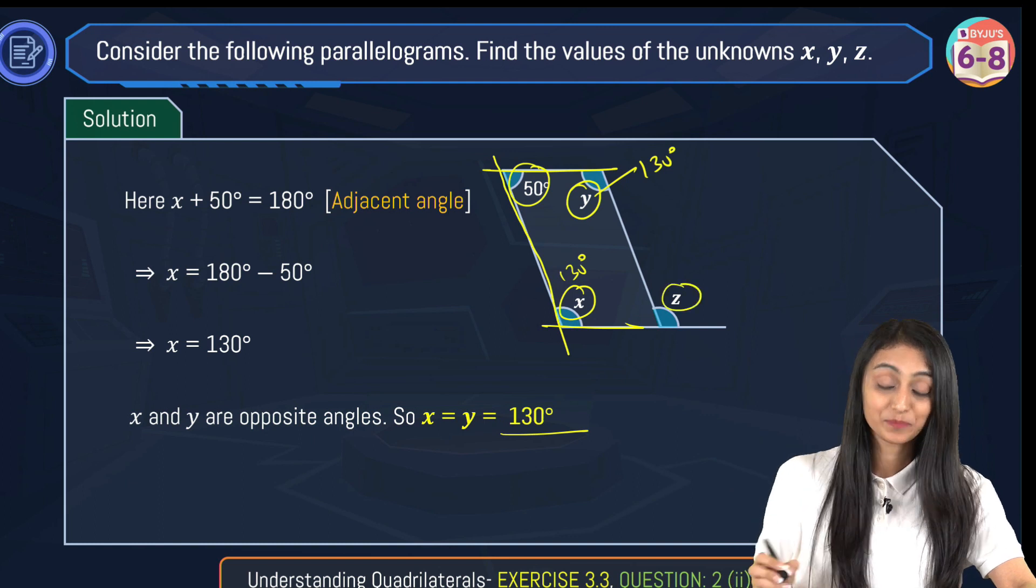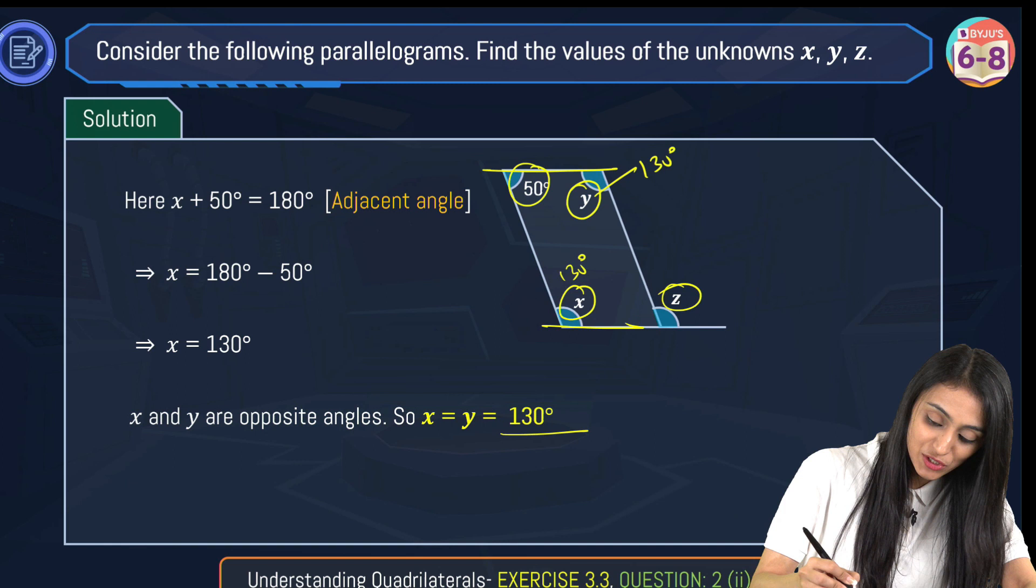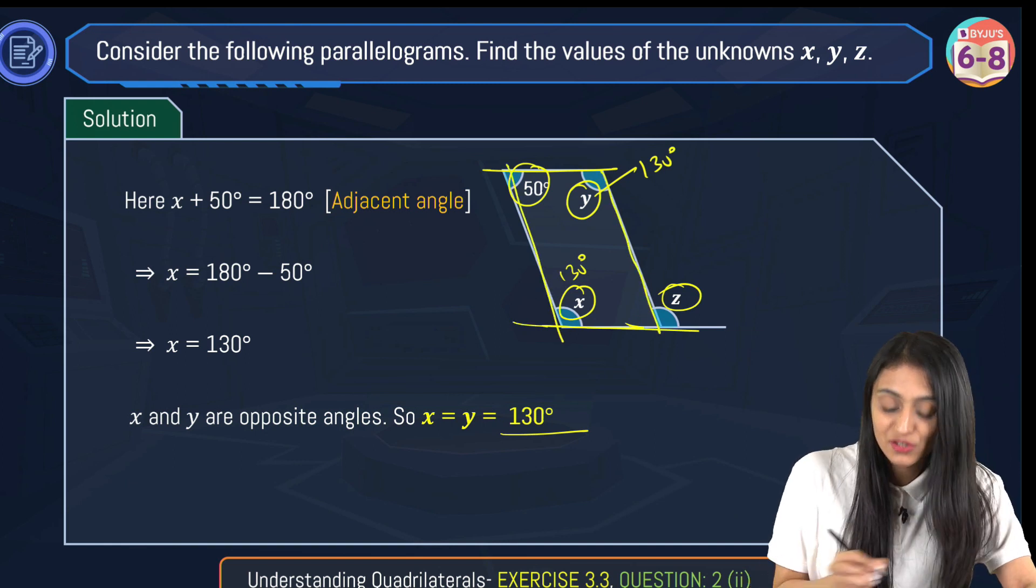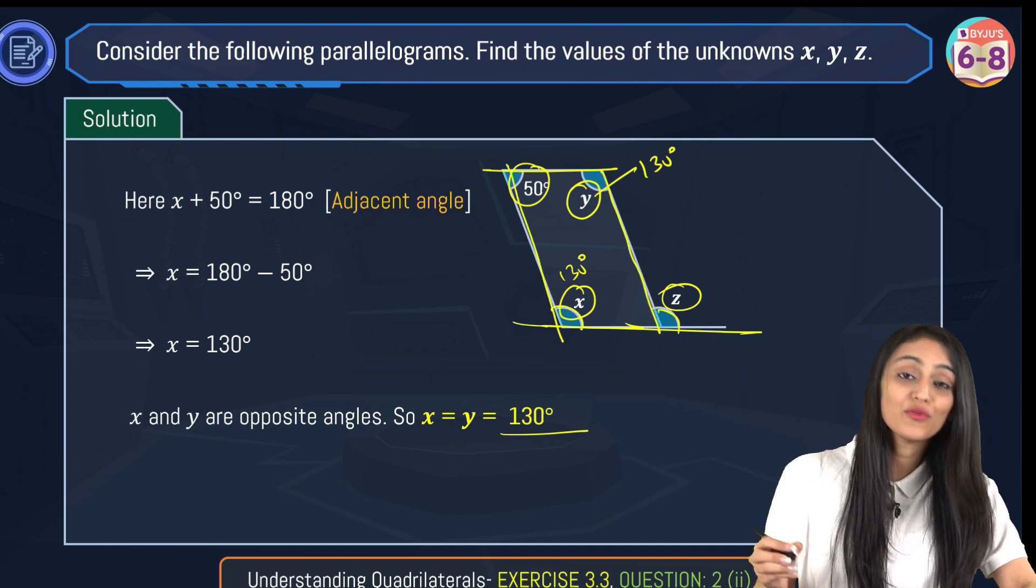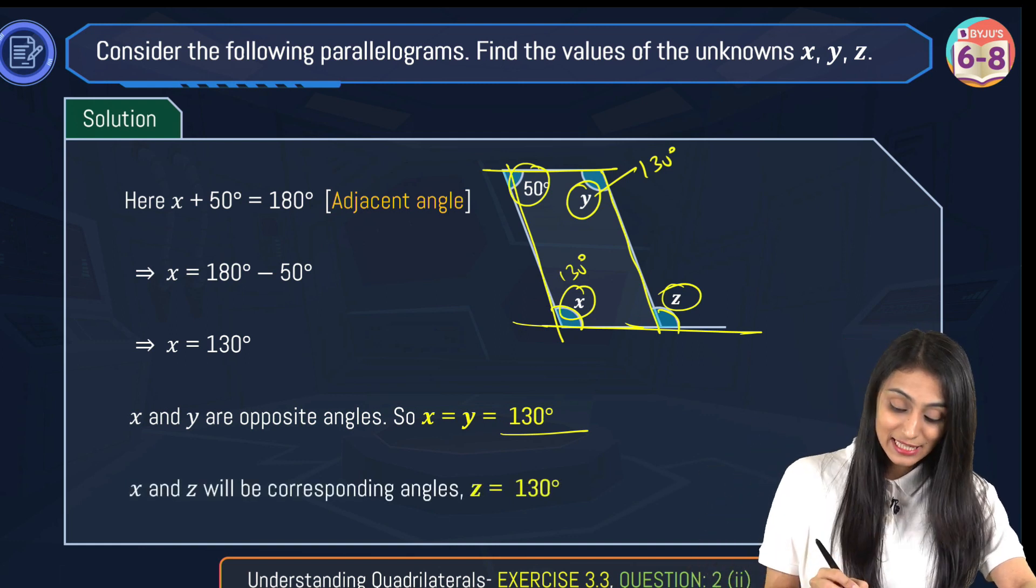Talking about angle z, now we know that these lines are parallel. These lines are also parallel and this is the transversal. And this x and z over here are forming corresponding angles. So measure of angle z is also going to be equal to x, that's 130 degrees.